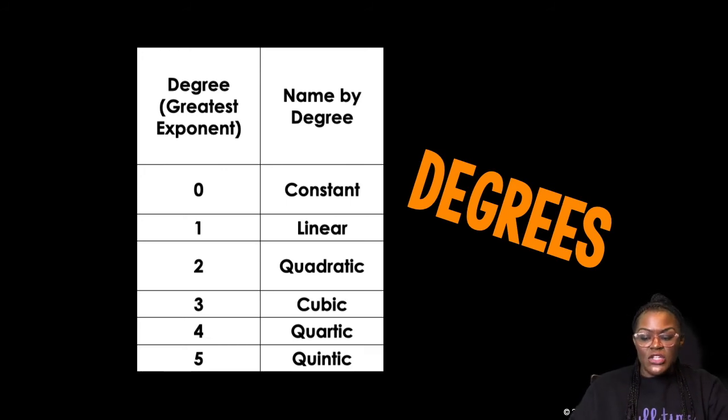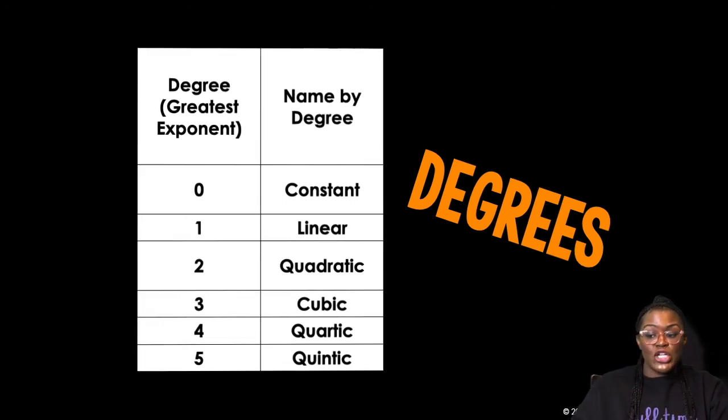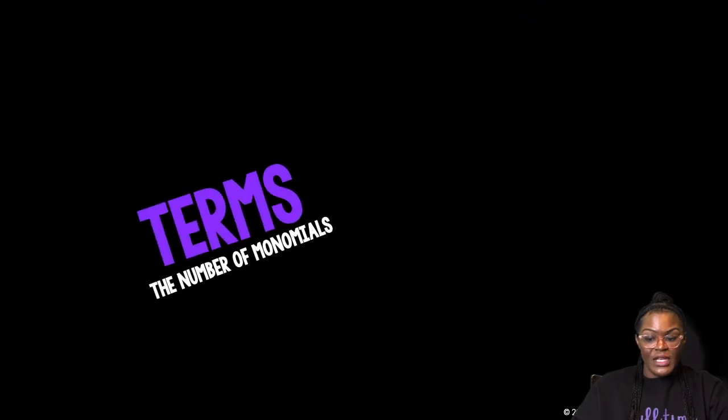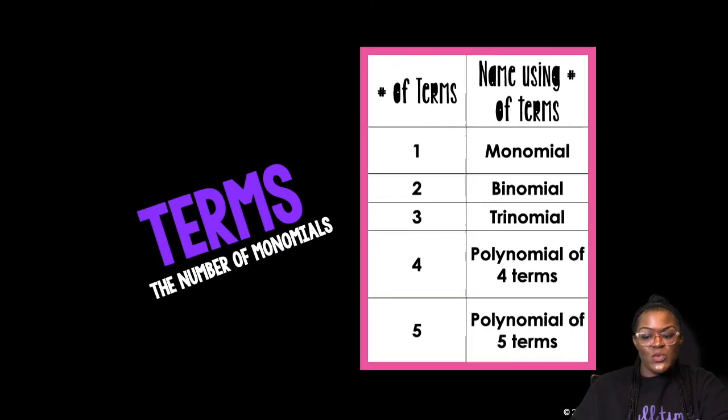And then you categorize them by terms, the number of monomials. So if it has one term, I call it a monomial. If it has two terms, I call it a binomial. And if I have three terms, I call it a trinomial. If it has four terms, I just say a polynomial of four terms. If it has five terms, I say polynomial of five terms. And I move on with my life.